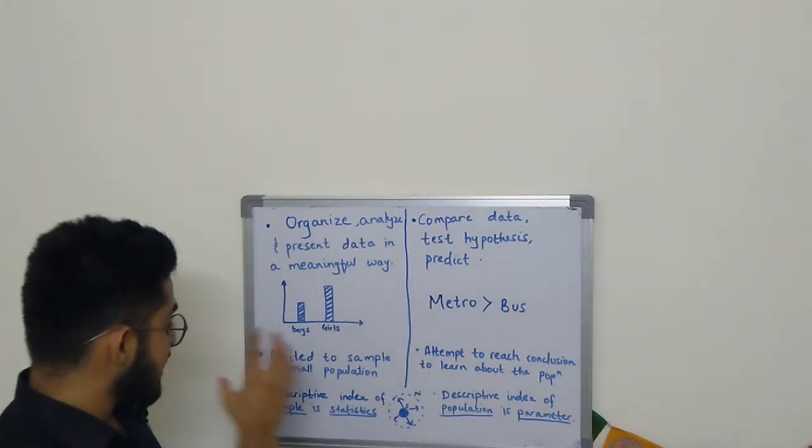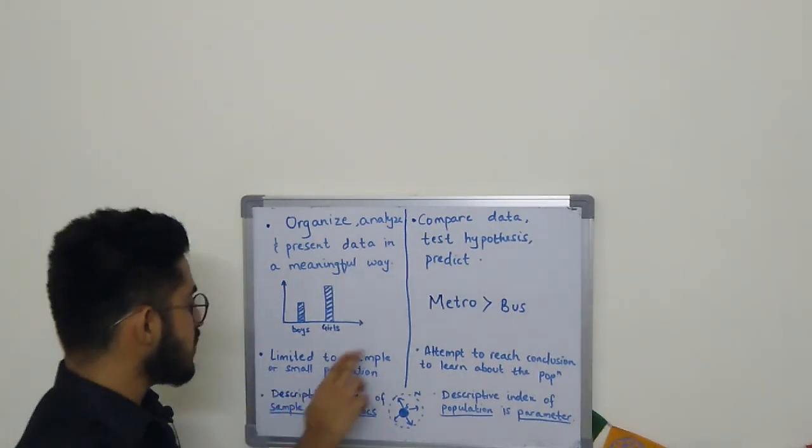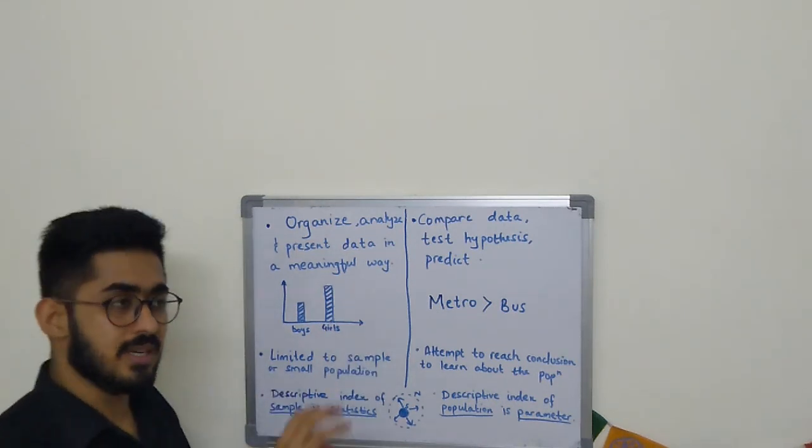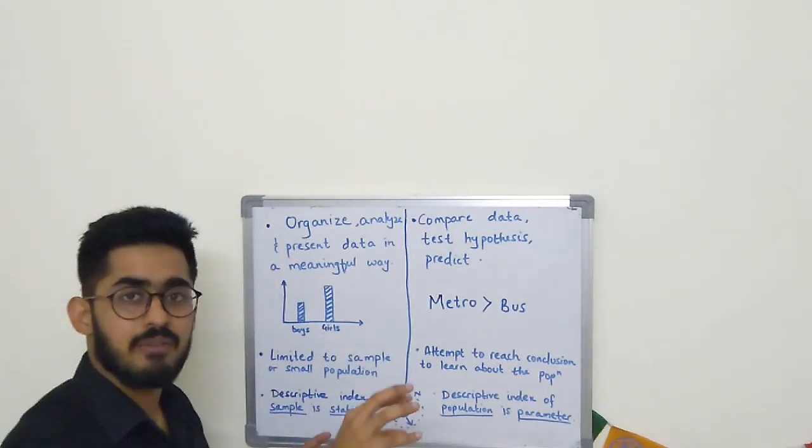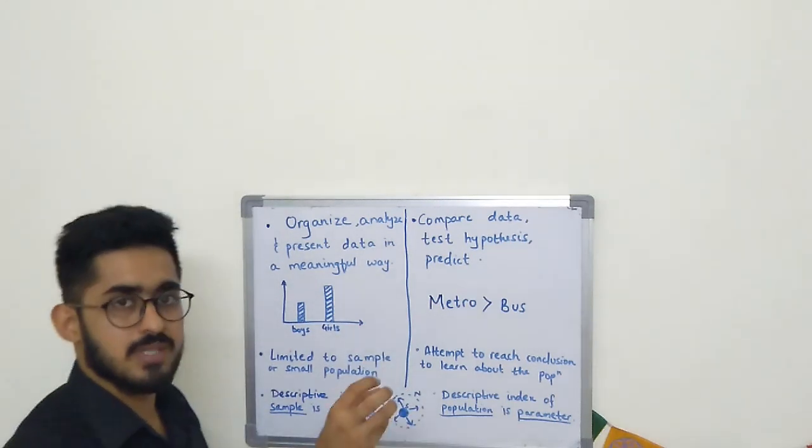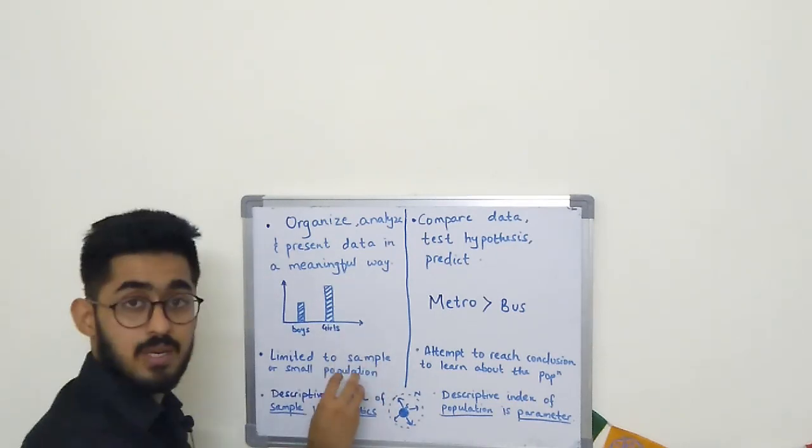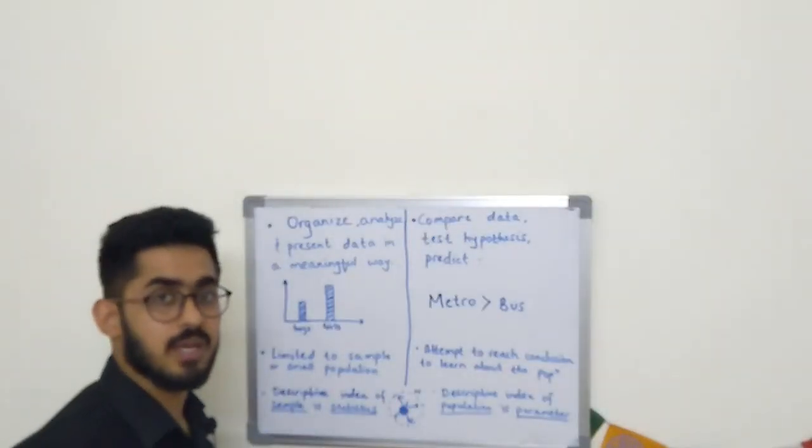Descriptive statistics is limited to a sample or small population. When we're describing data from a sample and using the characteristics of that sample, we are restricted to that sample.